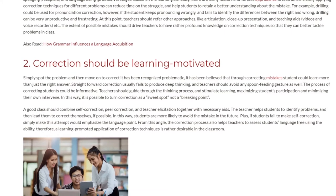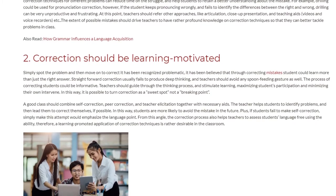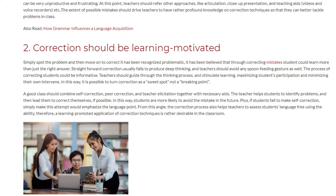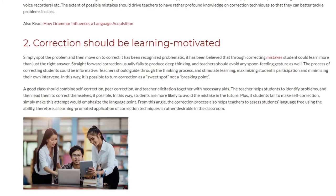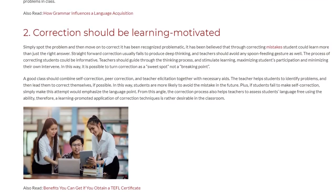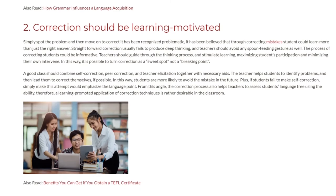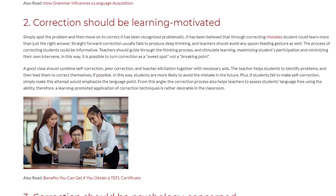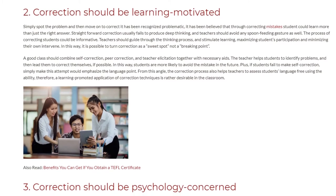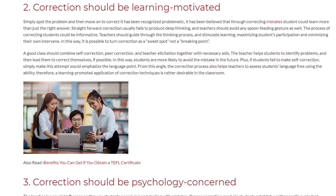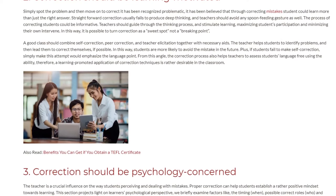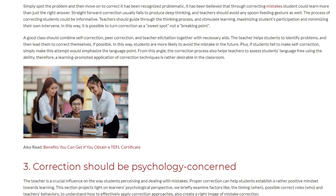By maximizing students' participation and minimizing their own intervention, it is possible to turn correction into a sweet spot, not a breaking point. A good class should combine self-correction, peer correction, and teacher elicitation together with necessary aids. The teacher helps students to identify problems and then leads them to correct themselves if possible. In this way, students are more likely to avoid the mistake in the future. Simply making this attempt emphasizes the language point.